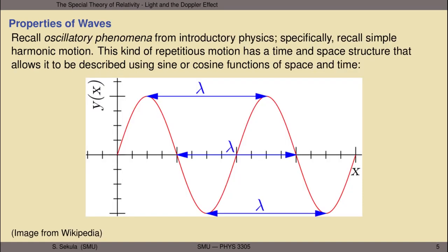Let's begin by recalling oscillatory phenomena from introductory physics. Specifically, let's look back at something called simple harmonic motion. This is a kind of repetitious motion that has a time and space structure that allows itself to be described using sine or cosine functions of space and time. For example, depicted in the graph at the bottom of the slide, we have the vertical position of some object as a function of the horizontal position of the object.